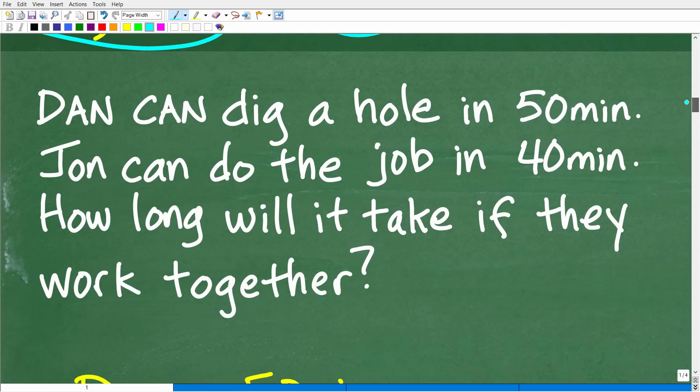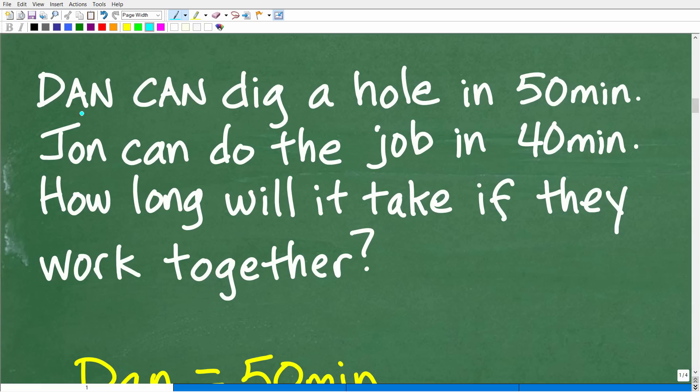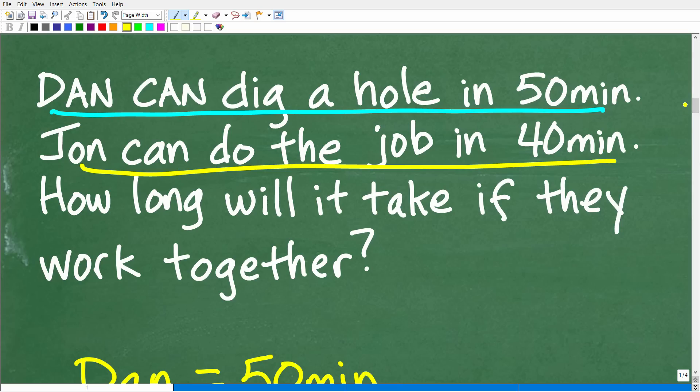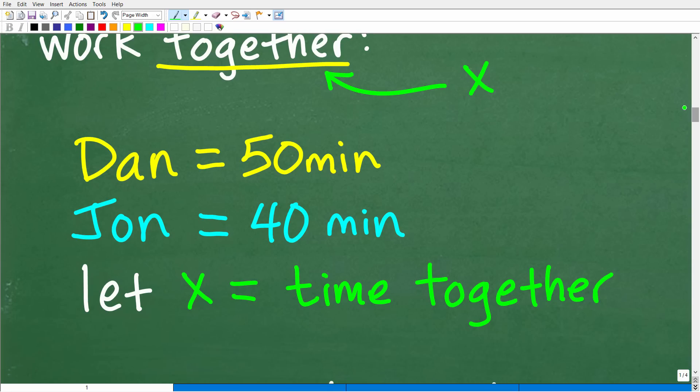Here is our problem. And again we want to kind of pull the specific information. Dan can dig a hole in 50 minutes and John can do the same job in 40 minutes. So we want to figure out obviously what amount of time it will take them to do this together. So this is an algebra problem. Let's assign a variable X. That will represent the time it will take them working together as a team. So we'll just kind of delineate this information this way. Dan can do this job in 50 minutes, John in 40 minutes, and we'll let X equal the time together. Of course that'll be in units of measure of minutes.